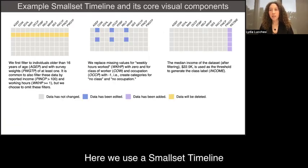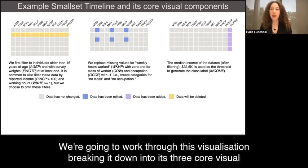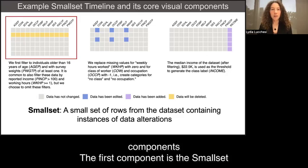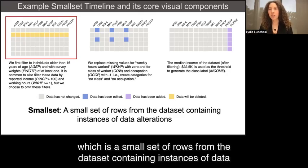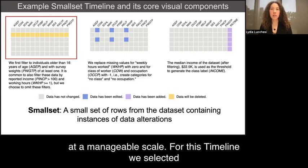Here, we use a small set timeline to communicate how we chose to pre-process the California dataset. We're going to work through this visualization, breaking it down into its three core visual components. The first component is the small set, which is a small set of rows from the dataset containing instances of data alterations. It's meant to provide real examples of data changes at a manageable scale.